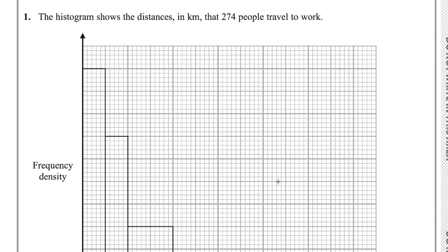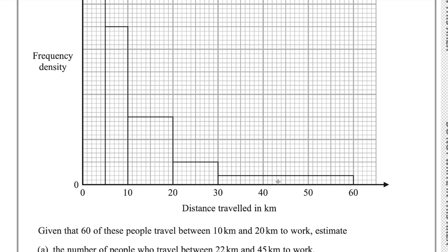This question is taken from a histogram. In this question you will be able to understand how to use interpolation to find the median as well. Let me read the statement first. The histogram shows the distance in kilometers that 274 people travel to work.